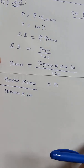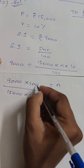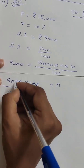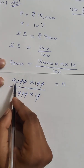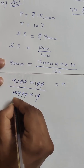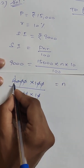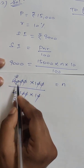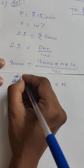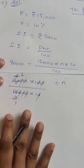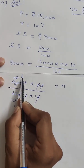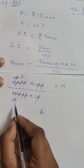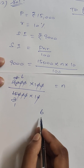Now cancel the zeros — 15,000 into 10. Cancel the 5 table: 5 into 3 is 15, so we get 1. Cancel further: 3 into 6 is 18, then 6 into 1 is 6. So 6 by 1 gives us T equals 6 years.